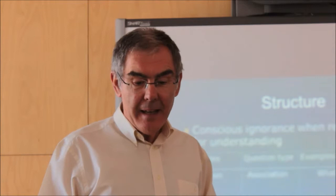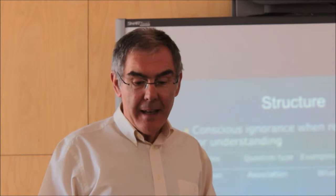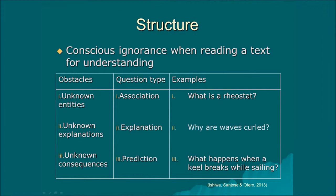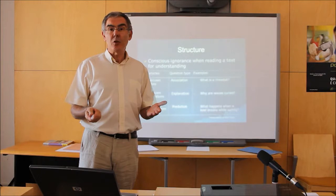Then students could be aware of a second type of basic unknowns related to explanations. They wanted to know why the processes or even the objects mentioned in the text were as they were, and they asked questions that we termed explanation questions, corresponding to explanation unknowns, made explicit by questions such as 'why are waves curled?'